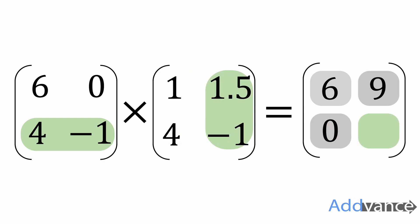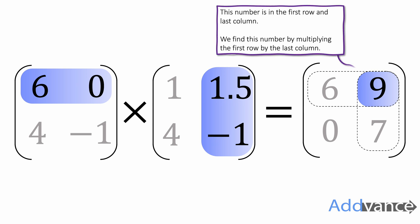Finally, 4 times 1.5 plus minus 1 times minus 1. Like this, I'm multiplying the bottom row by the last column. And I get this matrix here and I just want to point out how I got specific values here.